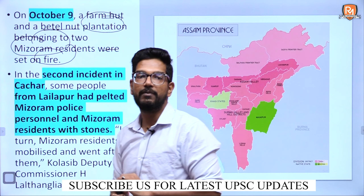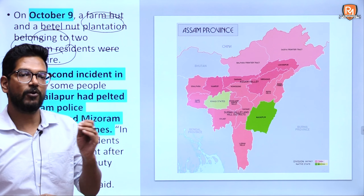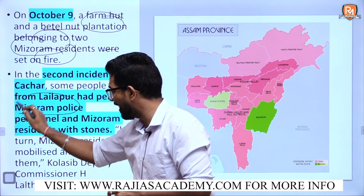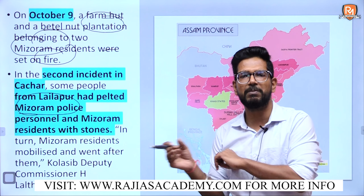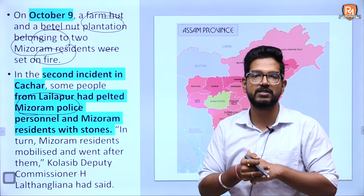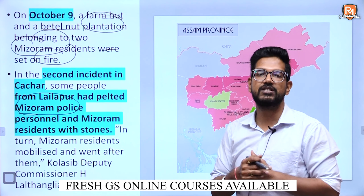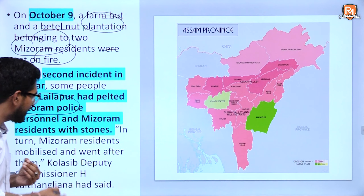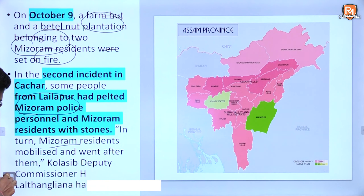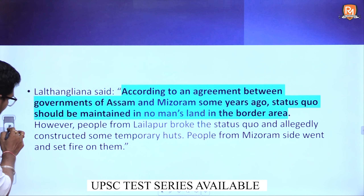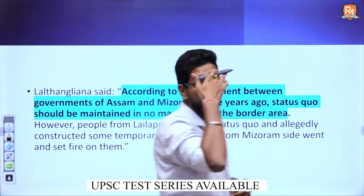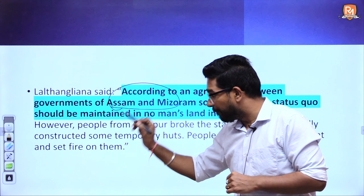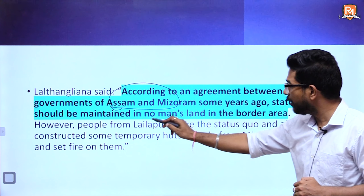However, according to the British government, this area was re-divided and separated from Manipur in 1933. So the core conflict is that Mizoram people say they should follow the 1875 map, whereas Assam says they must follow the 1933 map. These two different interpretations of the map have created the present problem in the Cachar area of Assam.